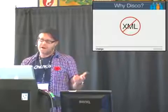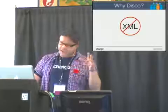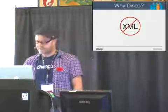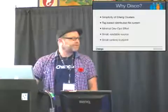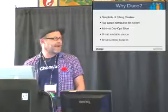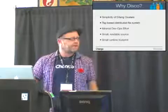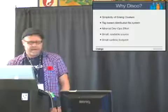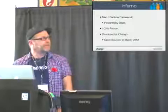Erlang seems like a really good fit for this type of system. It takes care of all those things — the BEAM architecture allows you to build distributed systems fairly easily. So why Disco? Simplicity. It's a few thousand lines of Erlang code. The distributed file system part is a tag-based system built on top of Unix/Linux file systems, so it's really simple. It's an interesting and small framework.